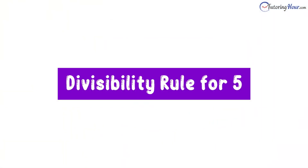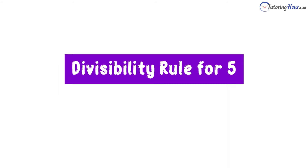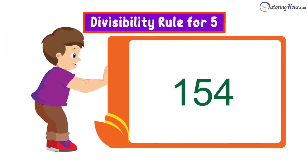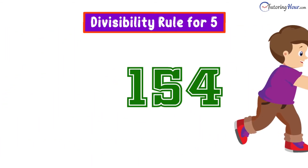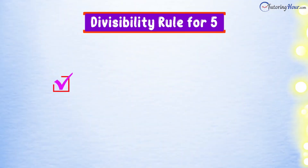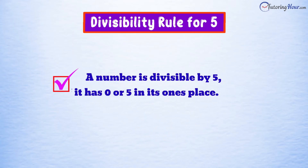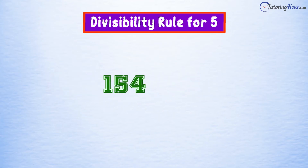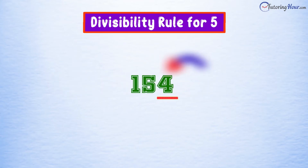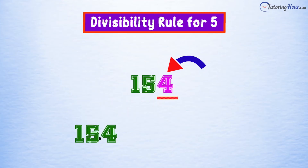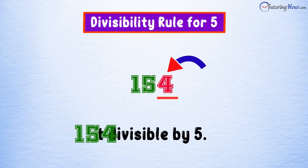We'll move up the ladder and check the divisibility by 5. Is the number 154 divisible by 5? The rule states a number is divisible by 5 if it has 0 or 5 in its ones place. The number 4 in the ones place hints that 154 cannot be evenly divided by 5.